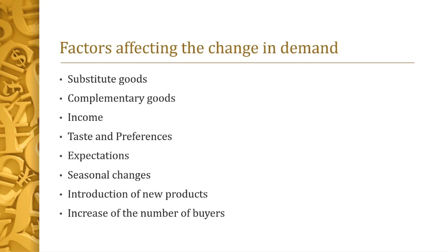Next are complementary goods. Examples include cars and tires, and bread and butter — meaning that when there is a decrease in the quantity demanded of bread, it would also affect the quantity demanded for butter, peanut butter, or sandwich spread, because these are complementary products. One cannot really be sold without the other.